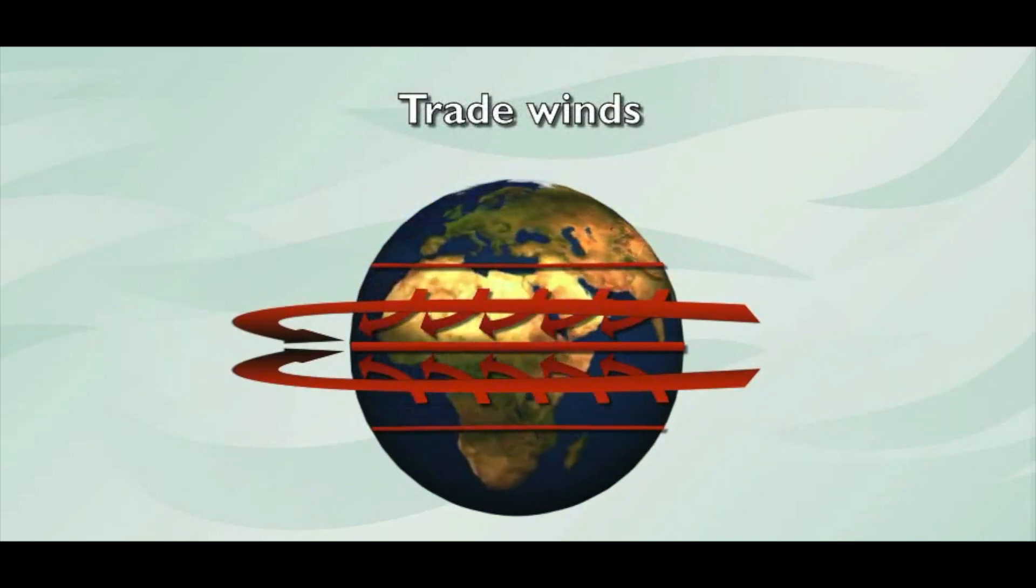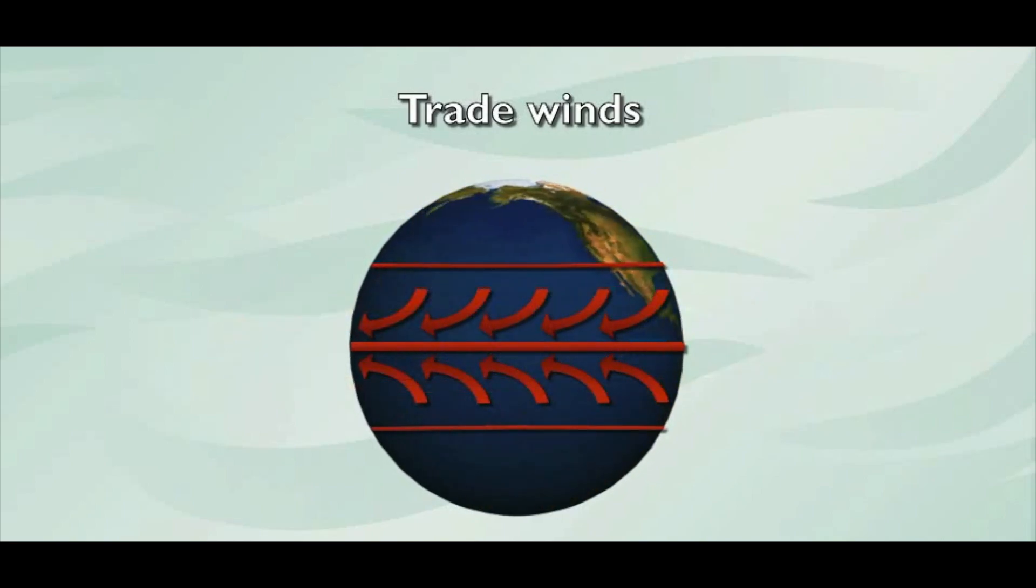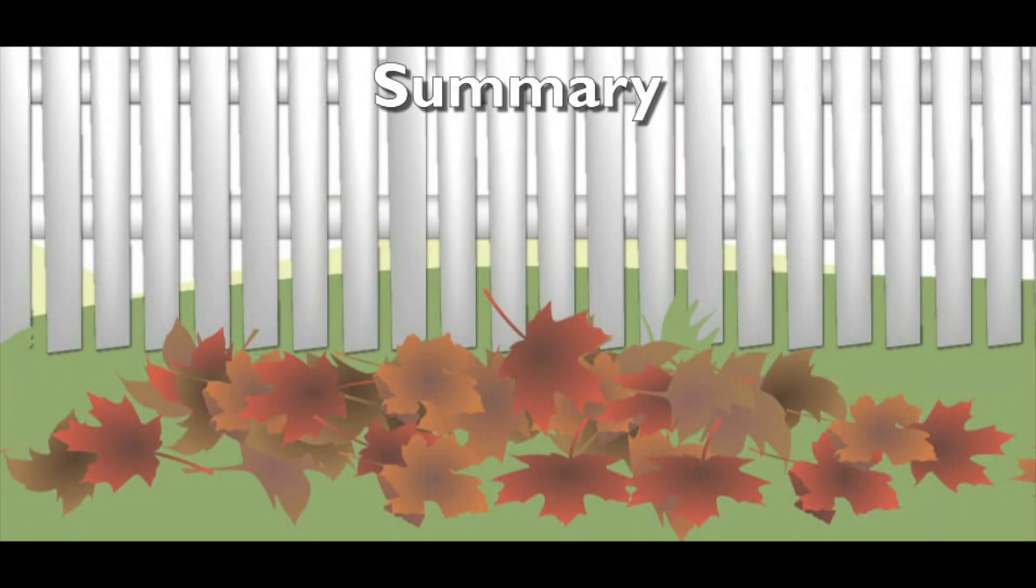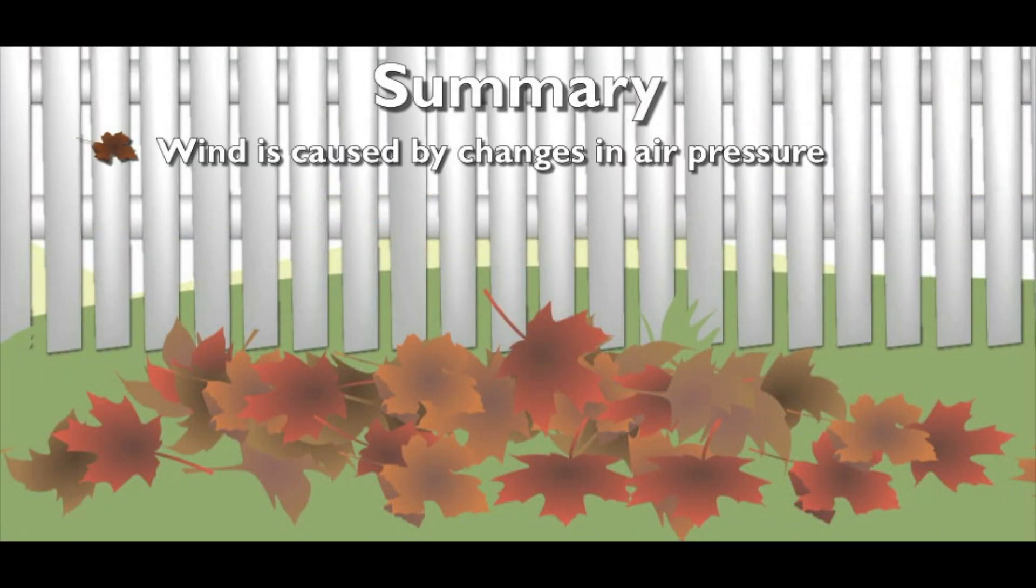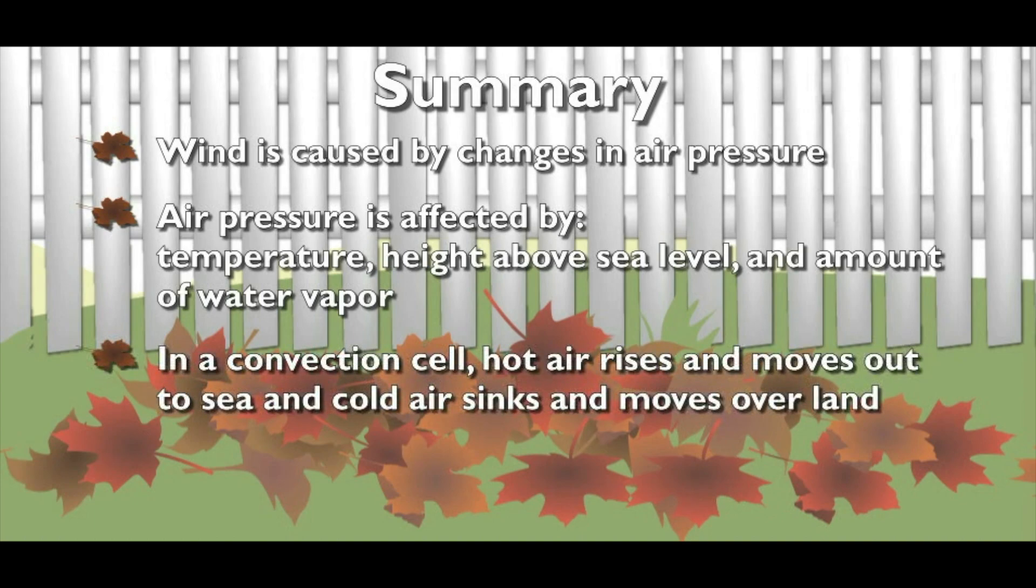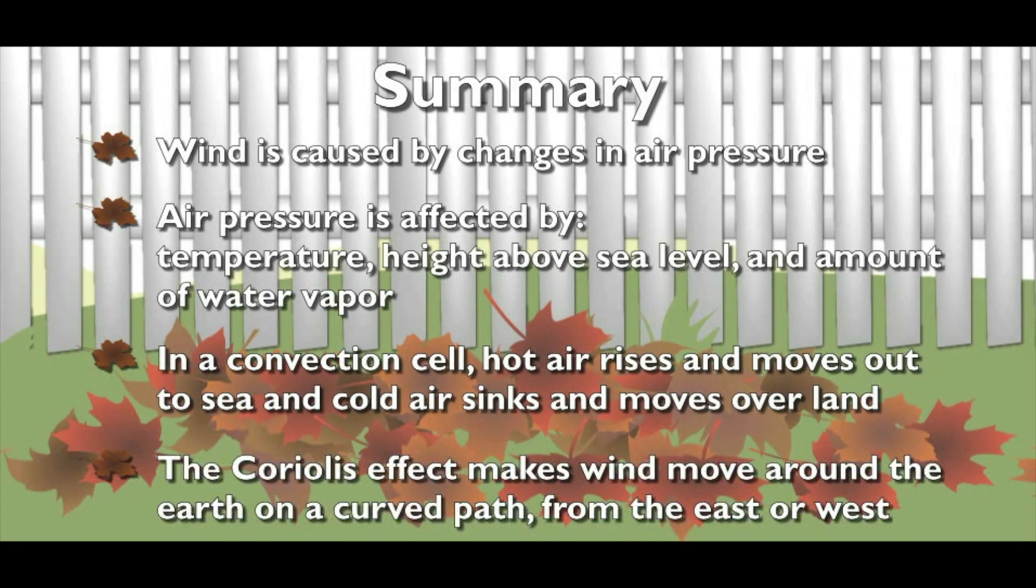So, that gust of wind that blew through and ruined our hard work, was that a prevailing westerly since we live in the middle latitudes? It probably was. You know, this wind thing is pretty fierce. I never realized wind was caused by changes in air pressure. Or that air pressure is affected by three things. Temperature, height above sea level, and amount of water vapor in the air. And the convection cell stuff? Hot air rising, cool air sinking. It's wild. But it's not as wild as the Coriolis effect. That's the spinning of the Earth that makes winds curve.